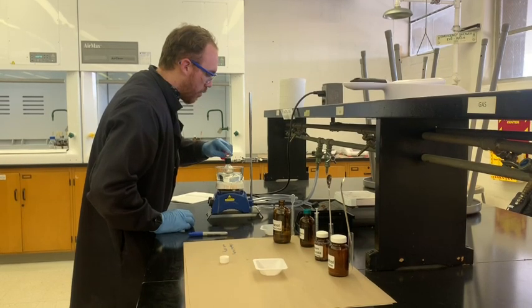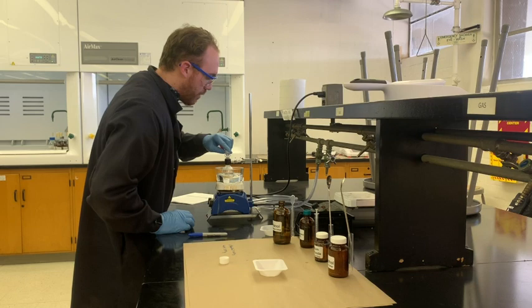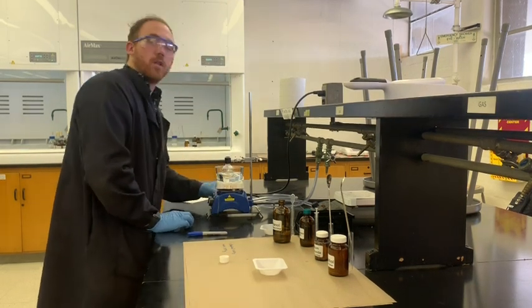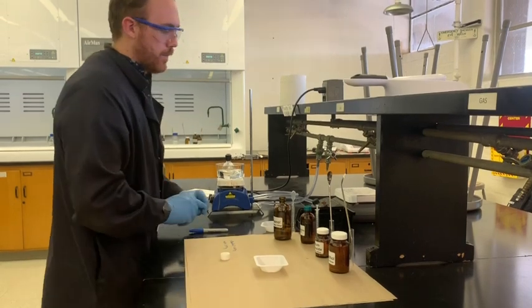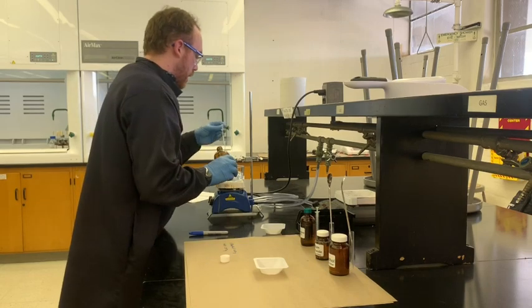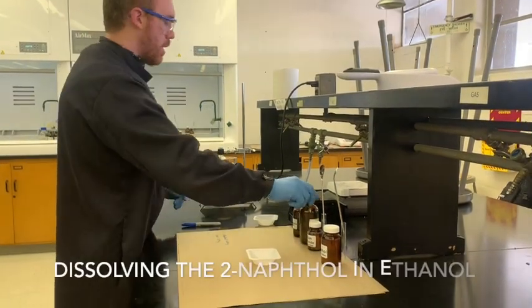Try to make sure that if you can, rinse off as much of the solid from the neck of the flask as possible. You don't want to lose any of the solid up in the neck. I'm going to use a little bit of this ethanol to give it another rinse because I think I lost a little more on the side.